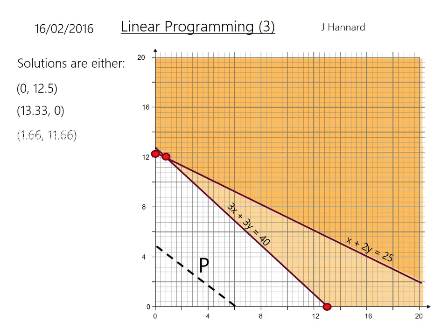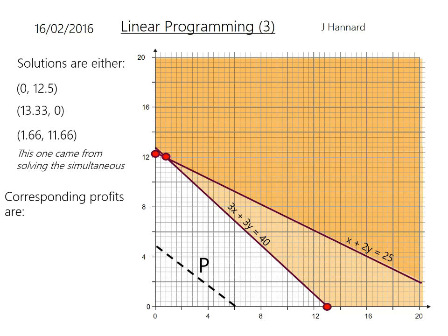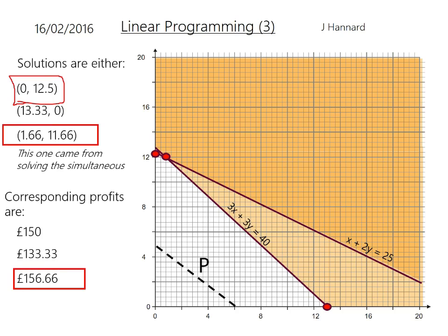These are the three solutions I've got by solving simultaneously. Which is going to give us the best value? The corresponding profits are: putting values into the profit function P = 10x + 12y — you come out with £150 for the first, £133.33 for the second, and £156.66 for the third. So that's obviously the maximum, but think about the question again.